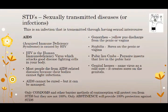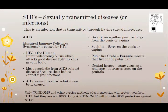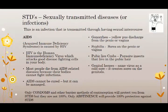STDs, which are known as sexually transmitted diseases, are diseases or infections that are transmitted through having sexual intercourse. Common examples include gonorrhea, syphilis, pubic lice or crabs, genital herpes, as well as HIV. HIV is a virus that attacks the good disease-fighting cells in your body. HIV can then become AIDS, which is acquired immune deficiency syndrome. Most people will die from AIDS-related diseases because their bodies cannot fight normal infections. AIDS cannot be cured but it can be managed by medication. Only condoms and other barrier methods of contraception will protect you from STDs, but they are not 100% effective. Only abstinence — abstaining or not having sex — will provide 100% protection against STDs.